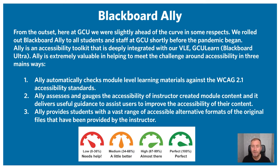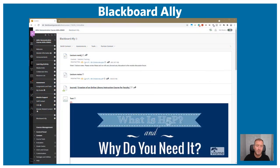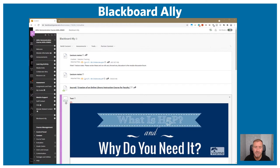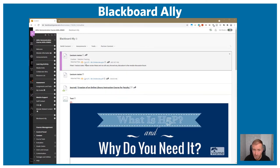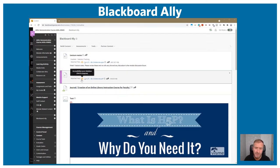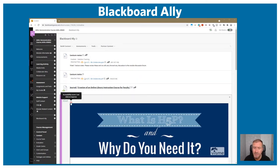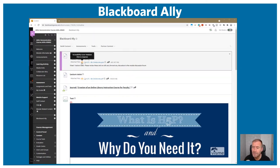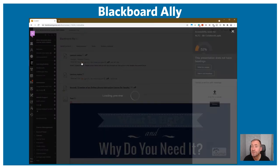Going back to how Ally gauges accessibility — it uses a scale shown at the bottom of the screen, starting from red for low, then amber for medium, light green for high, and dark green for perfect, meaning 100% in terms of meeting accessibility. What I'm going to do now is walk you through how it actually works within our VLE. Here are some materials uploaded to a sample module and we can see the score provided. Staff only see this Ally gauge, which prompts them with a call to action that they need to do something to improve.